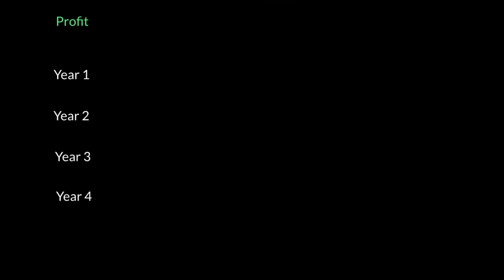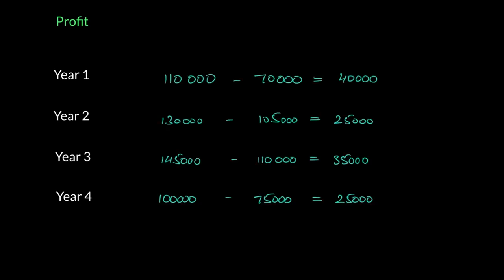So let's calculate our profit for every year. You guys should also try it first. So these are your profit figures. $110,000 minus $70,000. I'm just doing revenue receipts minus expenses. $40,000 is the profit for year one, $25,000 for year two, $35,000 and $25,000 for year four. So we haven't made any adjustments since they've given us accounting measures, revenue receipts and expenses. We've used that to calculate our profit. So yes, that's our profit calculation.